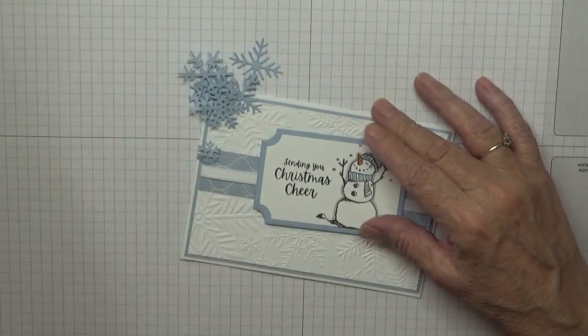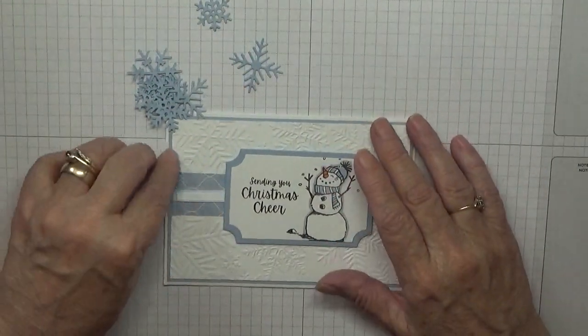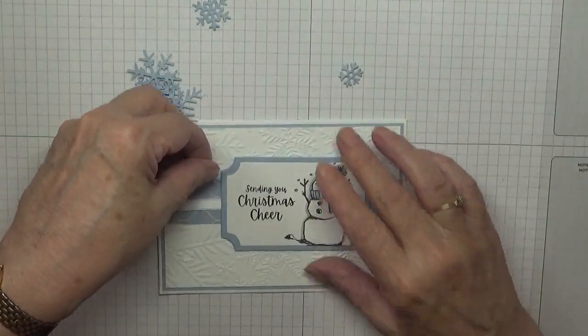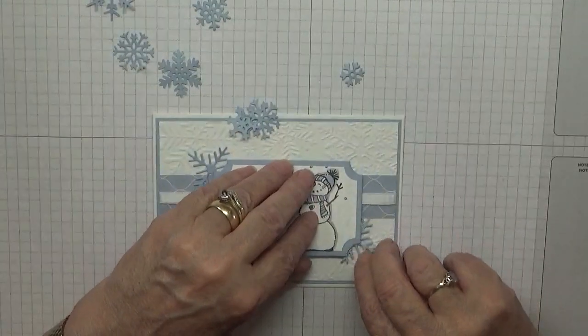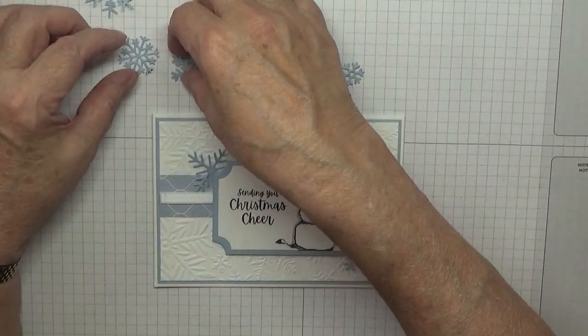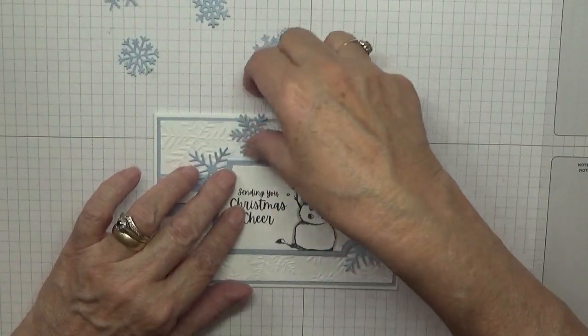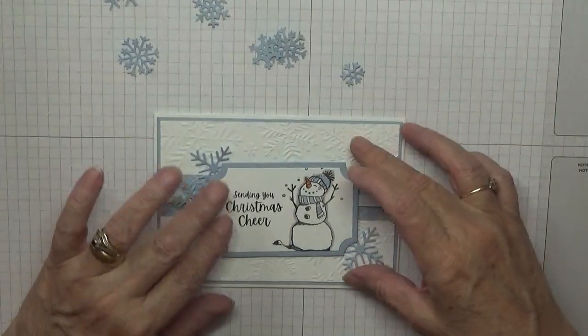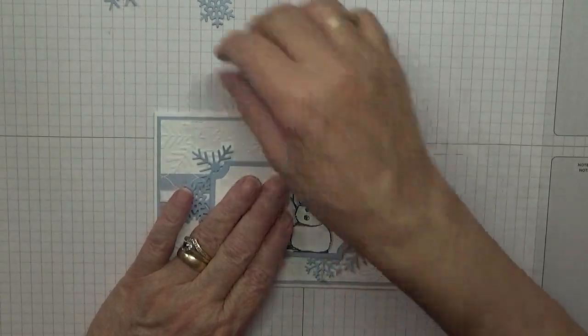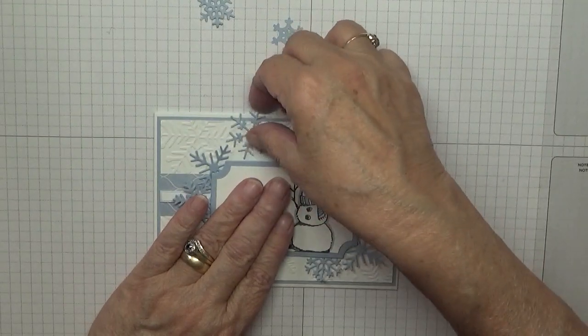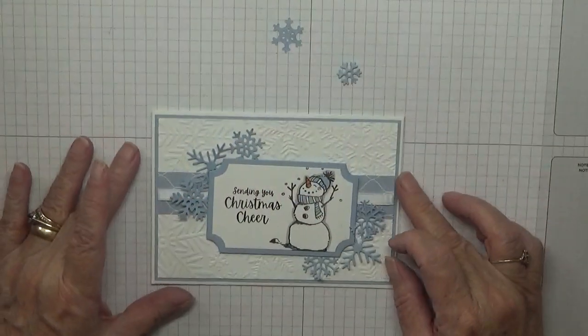And we've got all these snowflakes here which obviously I said I cut out before. So what we're going to do is tuck these under there. I've got two the same there, so I'm going to put one this side. Now I'm going to put that there on top of the ribbon.